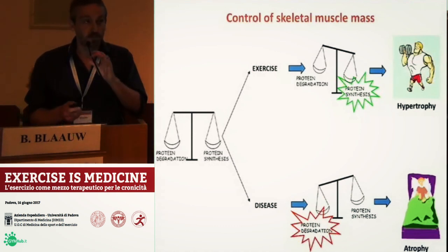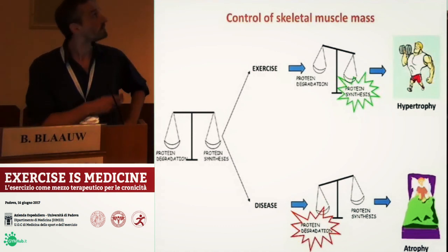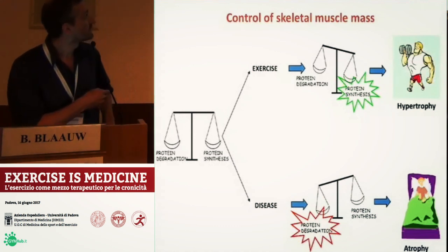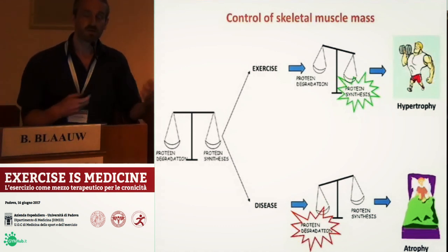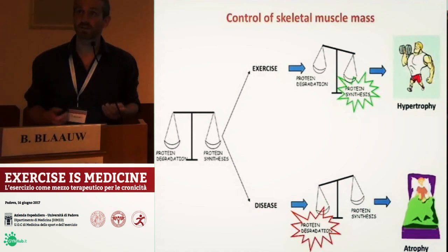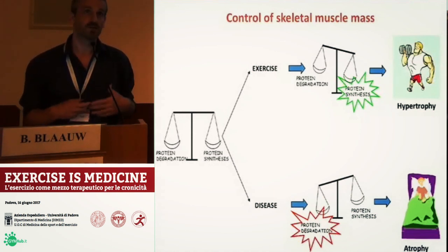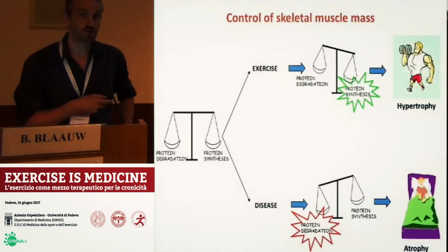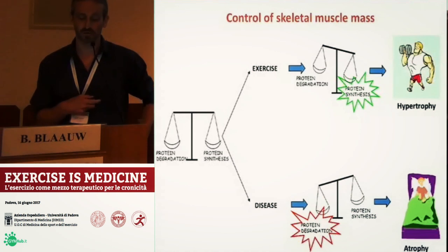Skeletal muscle mass, as you can see here on the slides, is a balance of protein degradation and protein synthesis. In a positive situation, let's say after exercise, when protein synthesis increases more than protein degradation, we are in a situation where muscle starts to grow and we are going into muscle hypertrophy.